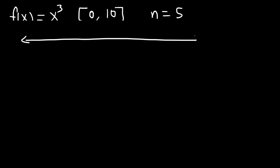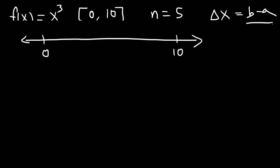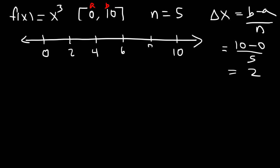We create a number line from 0 to 10 and calculate delta x. Delta x equals b minus a over n, which is 10 minus 0 divided by 5, giving delta x equals 2. So the subinterval endpoints differ by 2. To use the midpoint rule, we take the midpoint of each subinterval: 1, 3, 5, 7, and 9.